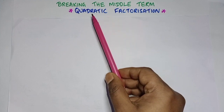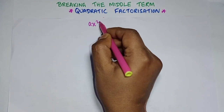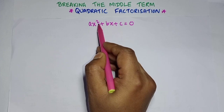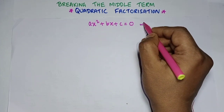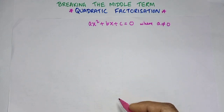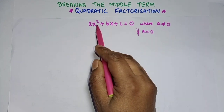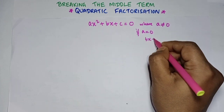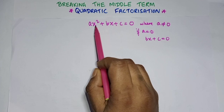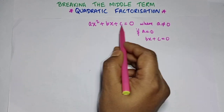Breaking the middle term is used for quadratic equations only. The general form is ax² + bx + c = 0, and where a should not be equal to 0. If a equals 0, then ax² becomes 0 and we are left with bx + c = 0, which is not quadratic form. So this method applies only when the equation is in quadratic form.